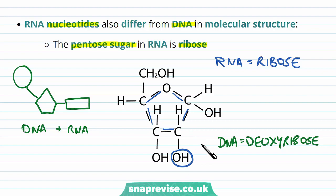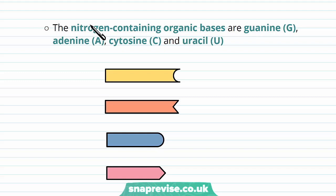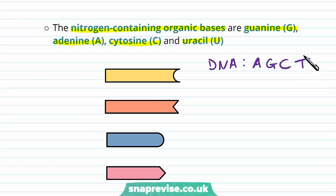Not only does the sugar differ, but some of the nitrogen-containing organic bases differ as well. We still have guanine (G), adenine (A), and cytosine (C), just like in DNA. But instead of thymine, we have uracil — just another type of nucleotide with a different set of atoms. So for DNA we have adenine, guanine, cytosine, and thymine; in RNA we have adenine, guanine, cytosine, and uracil. So for RNA, we replace thymine with uracil, and this pairs up in the same way as well.